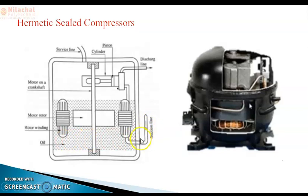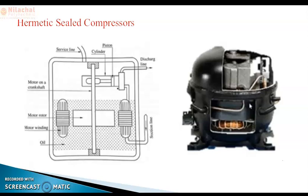The suction line is passed through the motor winding so that it will absorb heat from the motor winding. When the motor starts to run, after some time the motor winding heats up, and since it is an enclosed casing, heat dissipation is not easy. The suction line carries the heat — the refrigerant from the evaporator, at below atmospheric temperature (around 10°C), absorbs heat from the motor, so the temperature of the refrigerant increases.